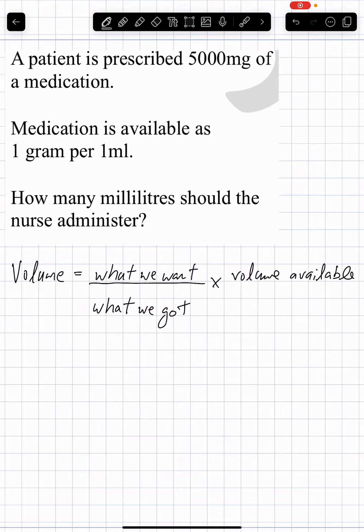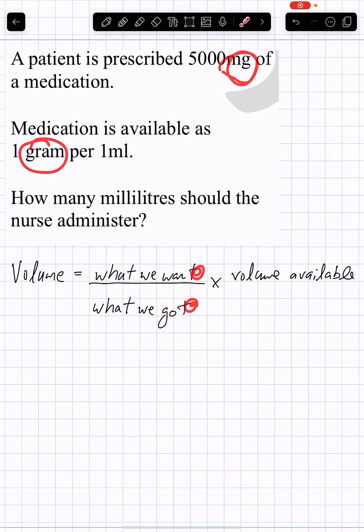Before we load up the formula, we need the same units in both positions. But our prescribed dose is in mg and the available concentration is in grams, so we have to convert one of these.